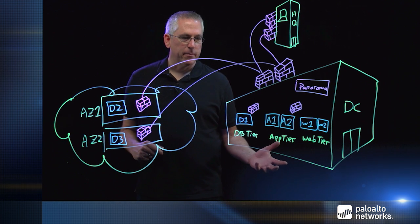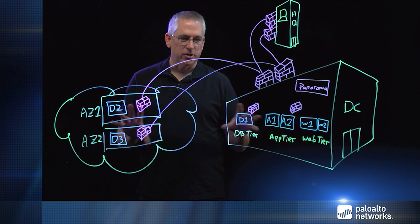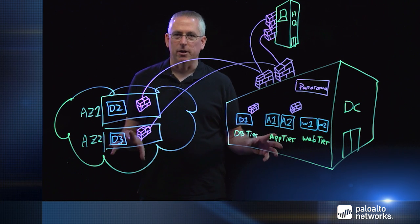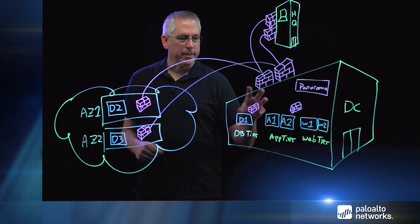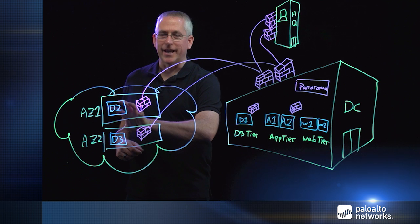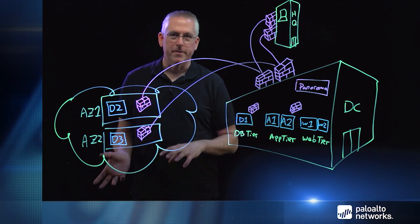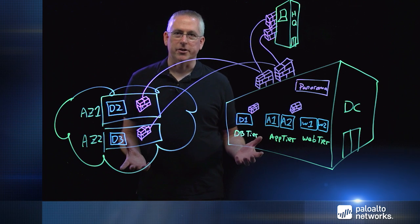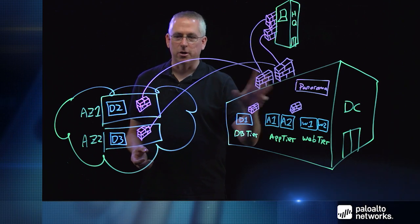We now have an environment with central management and logging with Panorama. We can manage all of our firewalls in different device groups but with common elements like dynamic address groups. We can scale up and scale down very quickly, burst things like a database tier into the AWS public cloud and scale it back down when not needed — without any permanent hardware investment — and we don't have to sacrifice any security. All of the next-generation security features at our private data center are available in the public cloud. For more information about how we secure public and private clouds, please go to our website at www.paloaltonetworks.com.